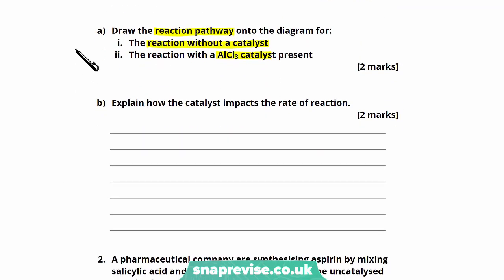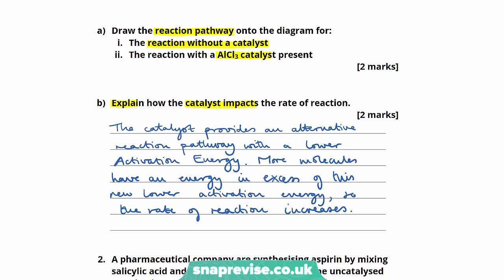Part b asks us to explain how the catalyst impacts the rate of reaction. Catalysts provide an alternative reaction pathway which requires a lower activation energy. As more molecules have an energy in excess of this new lower activation energy, more successful reactions occur and the rate of reaction increases. One mark for the alternative pathway with lower activation energy, a second for more molecules exceeding it, and we conclude that the rate of reaction increases.